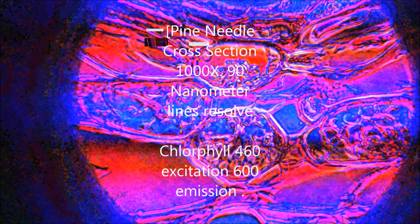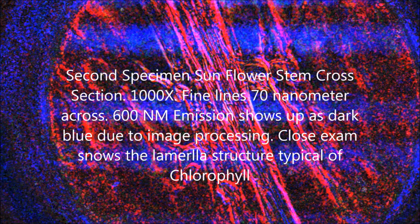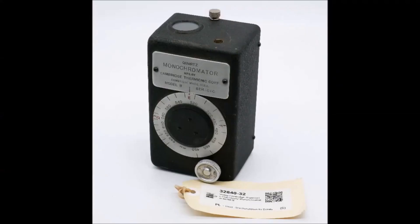We have two plant specimens here. The first is a pine needle cross-section, 90 nm lines clearly seen. The second is a sunflower stem cross-section, 70 nm lines are seen, 1,000x. The lines appear dark blue, not the 600 nm fluorescence from the chlorophyll, due to the image processing. What counts is seeing the image geometry.